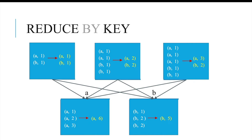Both reduceByKey and groupByKey result in wide transformations, which means both trigger a shuffle operation. The key difference between them is that reduceByKey does a map-side combine, whereas groupByKey does not do a map-side combine. Let's understand what that means.